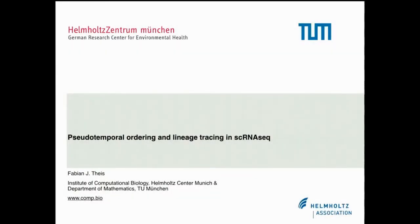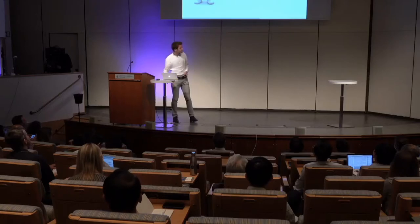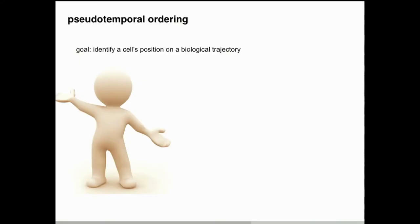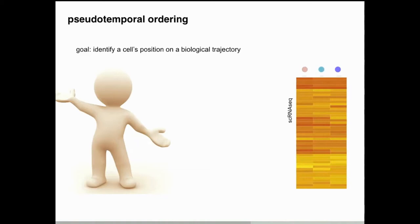You heard already about pseudotemporal ordering. Essentially we want to take static data and want to see what type of dynamics are in there. So let me start very simple. This is our human and we want to make an atlas out of that. So let's take a few cells from different positions, take them, do single cell RNA sequencing and then hopefully embed them in this high dimensional space and learn something about transitions.